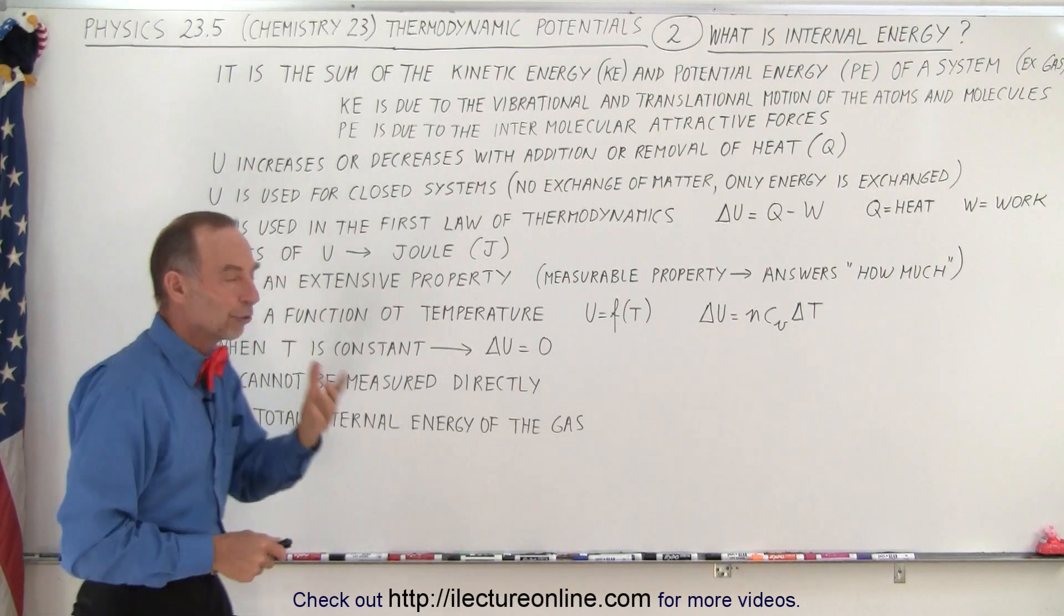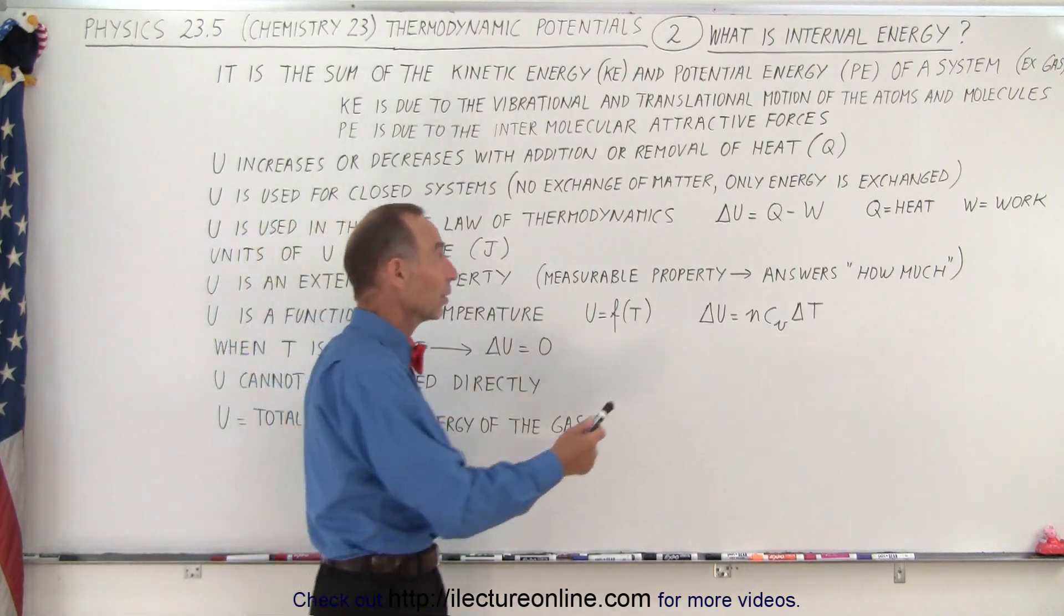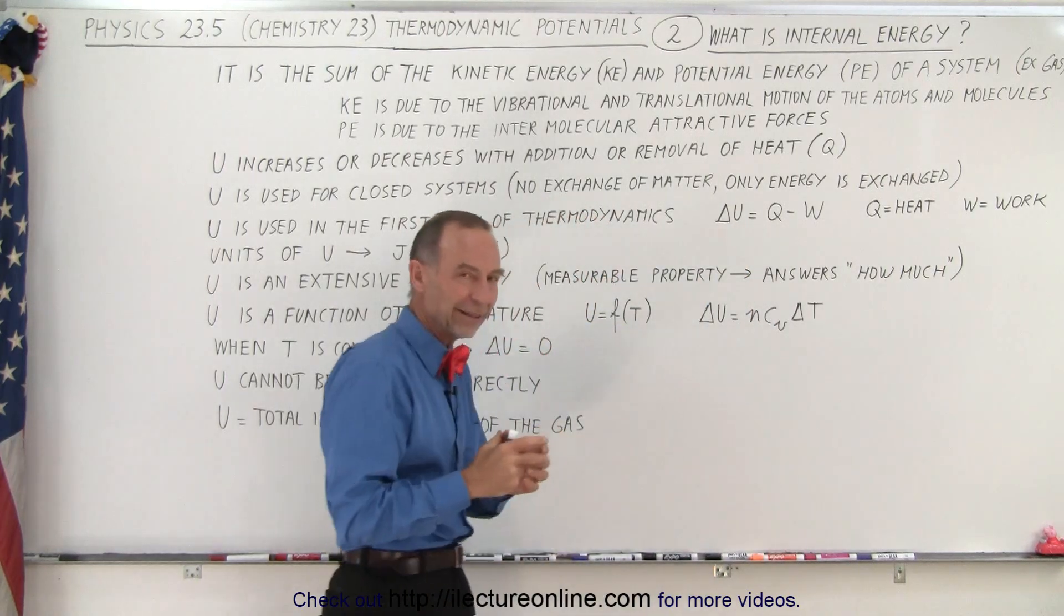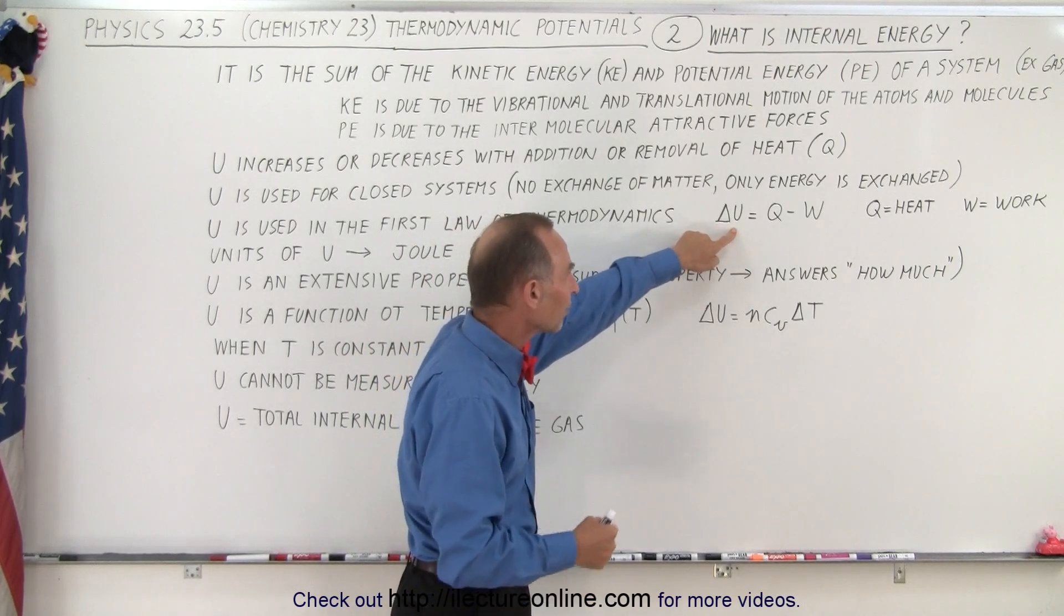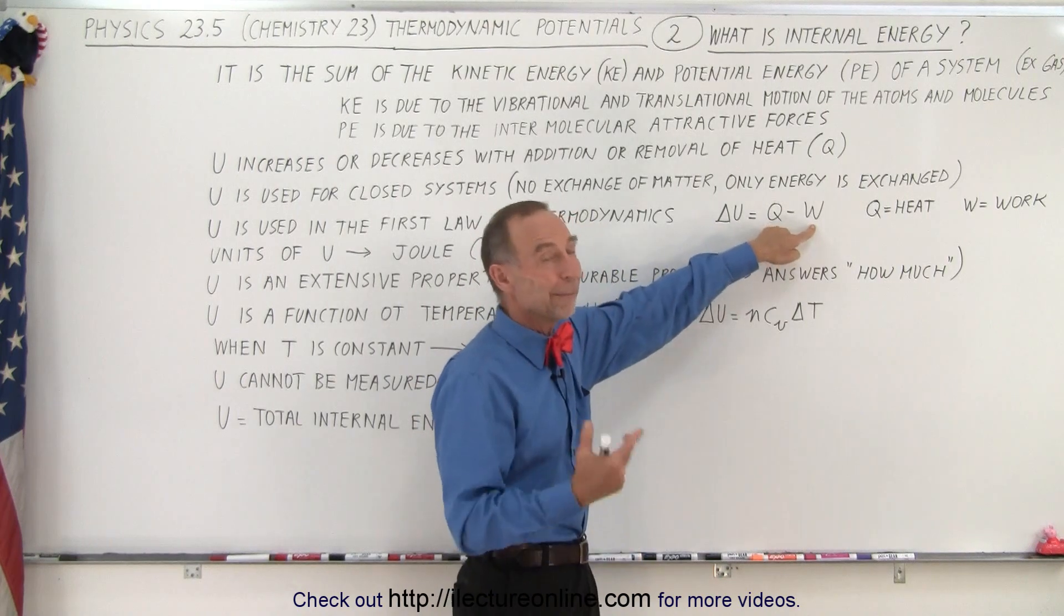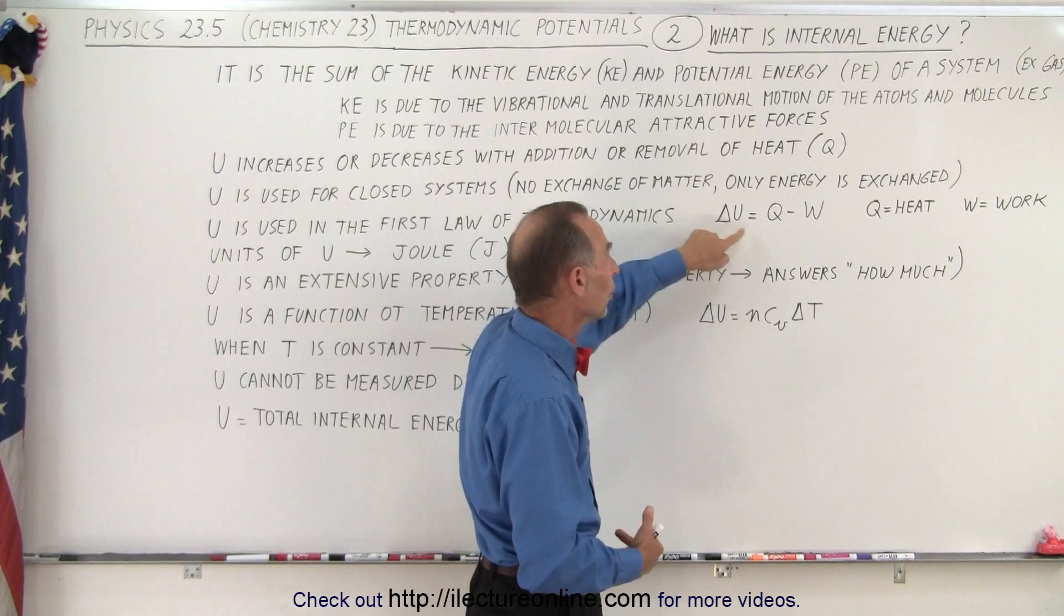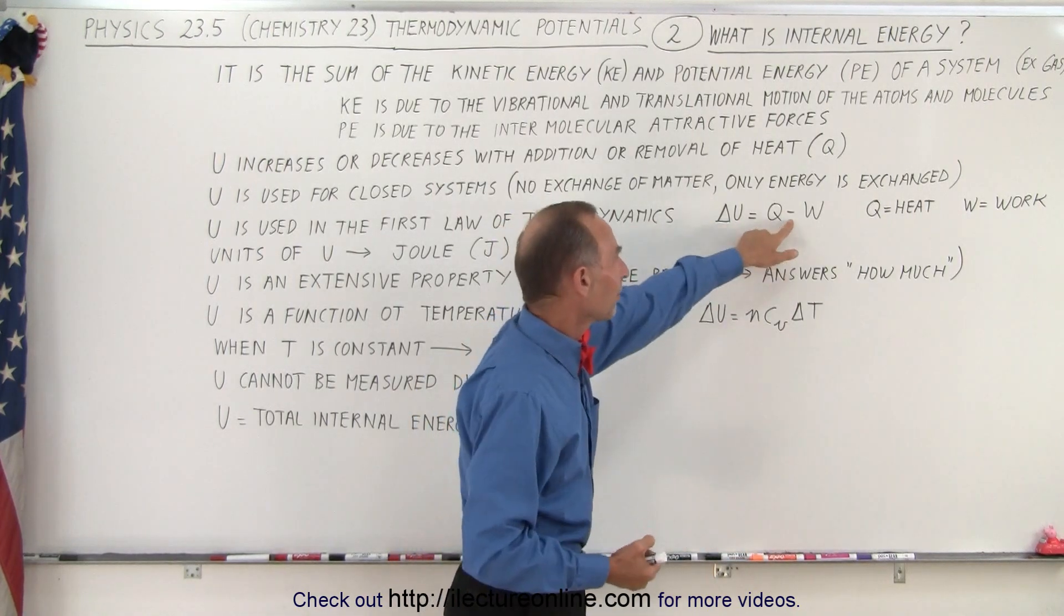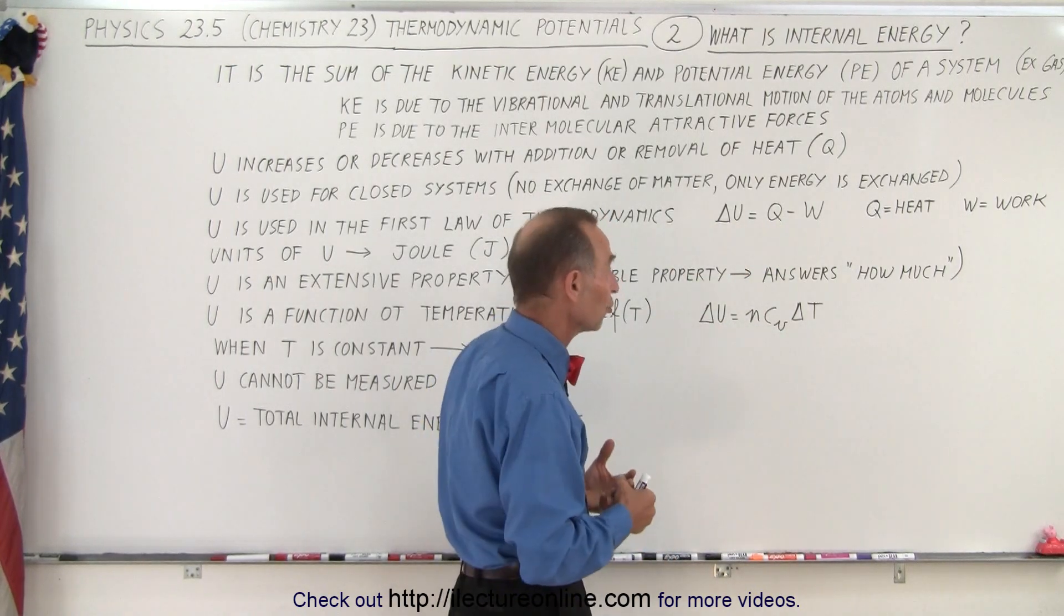Internal energy is also used in the first law of thermodynamics. If you saw the first video in the series you saw the equation that the little triangle sign there, that's the Greek letter delta, and that means the change in the internal energy of a gas equals the heat added to the gas minus the work done by the gas. So when we add heat that makes that a positive Q, we get a positive delta U. But if the gas does work that pulls heat out of the gas, that means we'll subtract that from the heat added to the gas to give you the total change in internal energy.